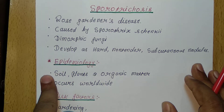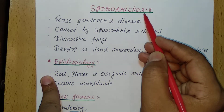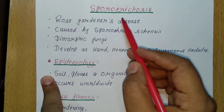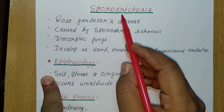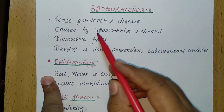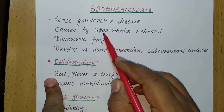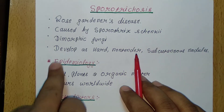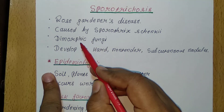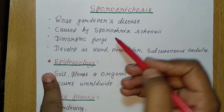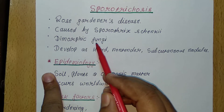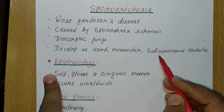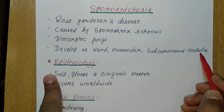Sporotrichosis is also known as rose gardener's disease. It is caused by the fungi called Sporothrix schenckii. This Sporotrichosis is a dimorphic fungi and it develops as hard, non-tender and subcutaneous nodules in patients.